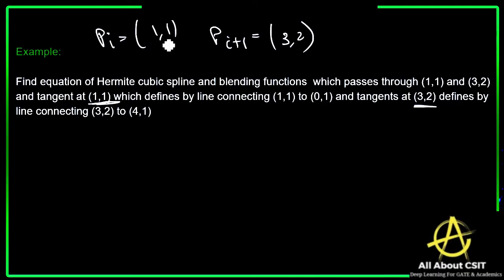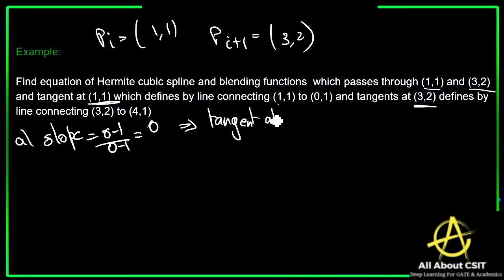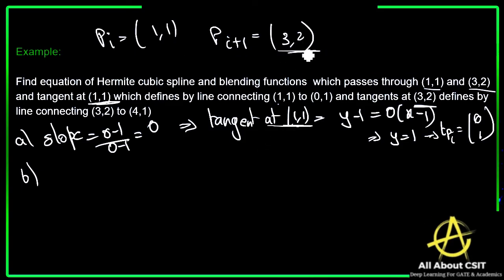For the tangent at (1,1), connecting (1,1) and (0,1), the slope equals (0−1)/(0−1) = 0. So the tangent at (1,1): y − 1 = 0·(x − 1), which gives y = 1. The tangent vector T_Pi = (0, 1), where x = 0 and y = 1.